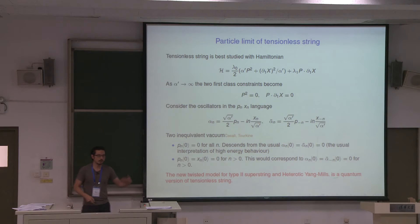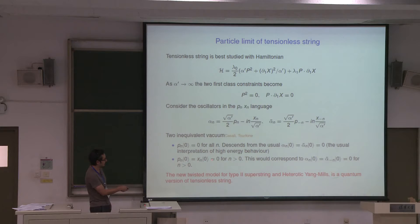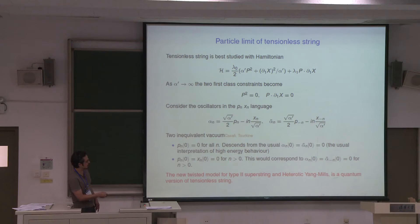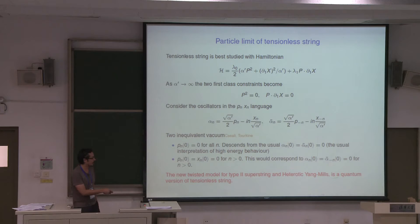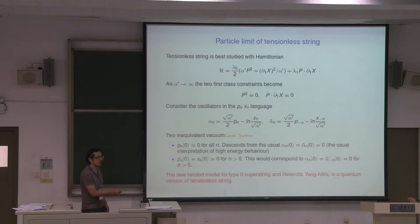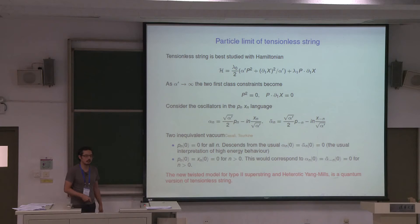Translating this second condition into oscillator language, you see it's alpha_n acting on the vacuum and alpha-tilde dagger acting on the vacuum equals zero — precisely the flip on the left-hand side where alpha-tilde becomes alpha-tilde dagger. This is precisely the quantization condition discussed before in terms of the Bogoliubov transformation. So this theory, when you take alpha prime to infinity, is precisely the tensionless limit of superstring, but quantized in a different vacuum than what you would naively expect.